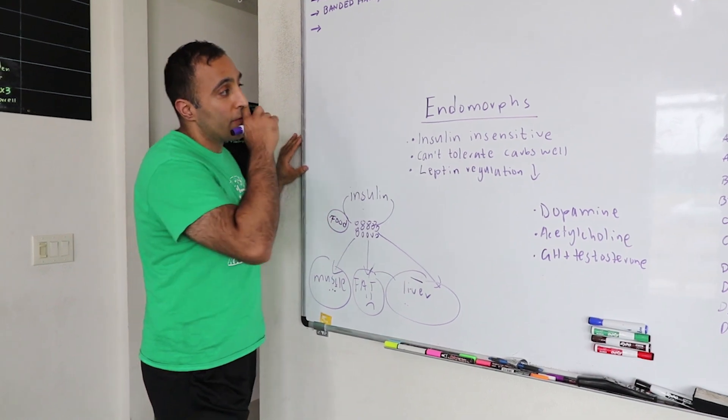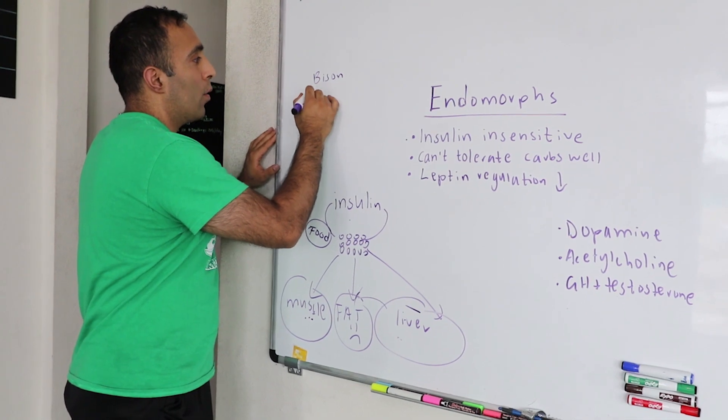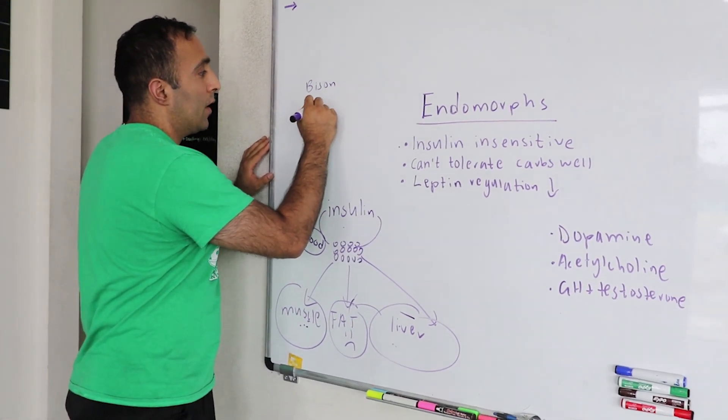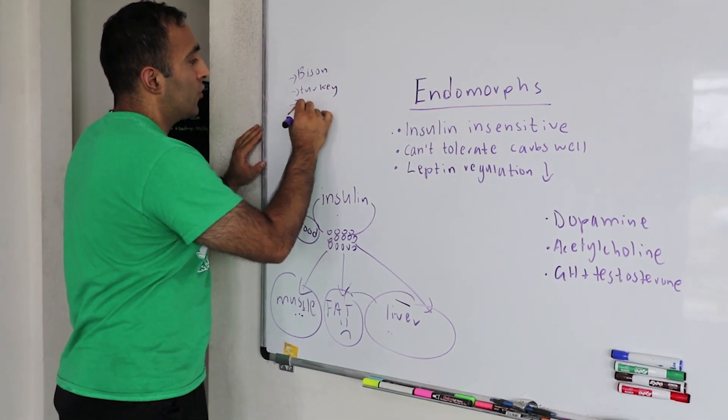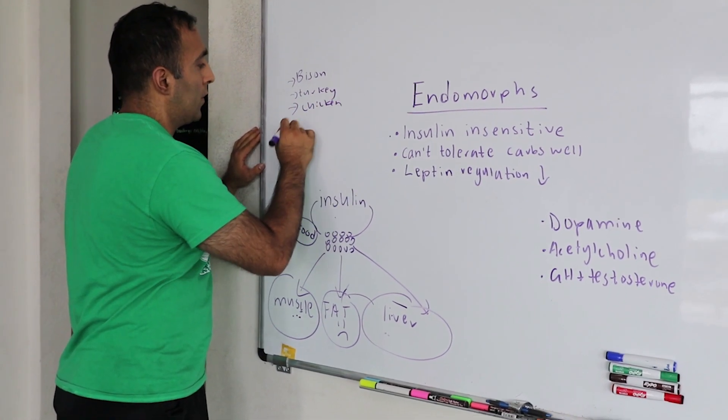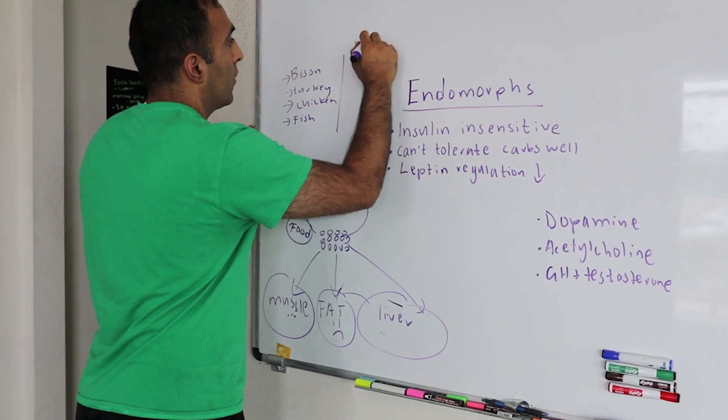Typically what I recommend if you're a meat eater: things like bison, a lean meat like bison, or turkey, or chicken, or even fish.